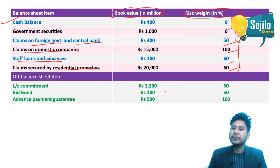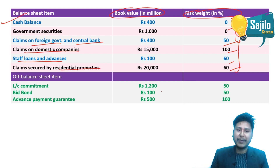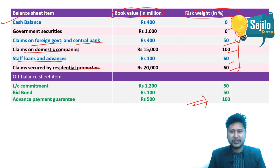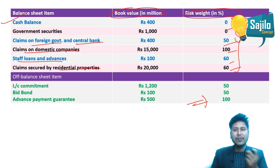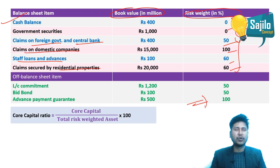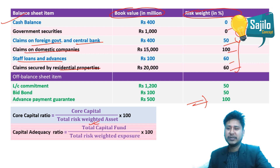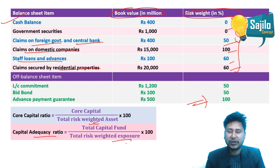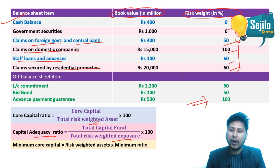The off-balance sheet items include LC commitments, bid bonds, and advance payment guarantees, each with their respective risk weights. Using these, we calculate the core capital, the capital adequacy ratio, and the minimum required capital. The formula is: core capital ratio equals core capital divided by total risk-weighted assets, multiplied by 100%.